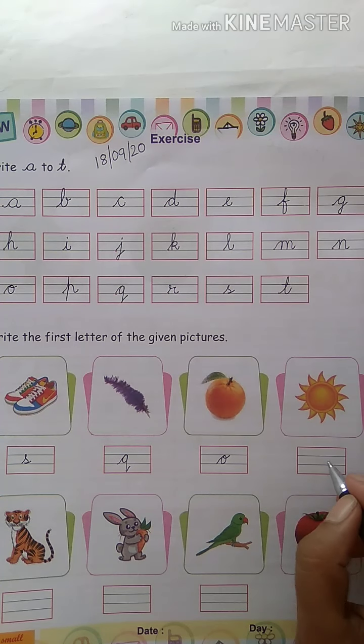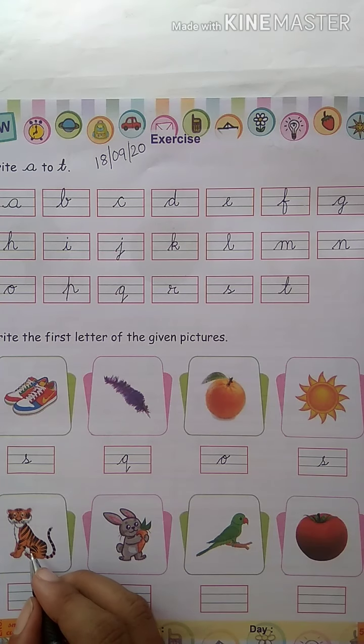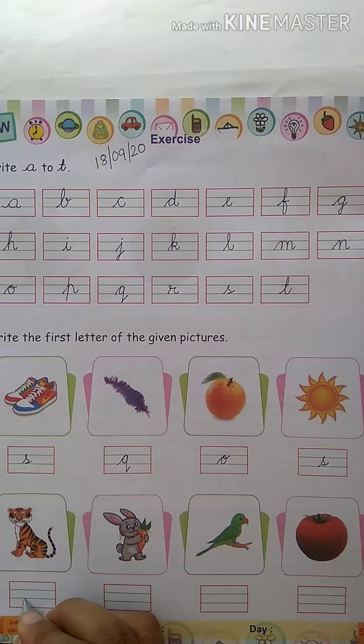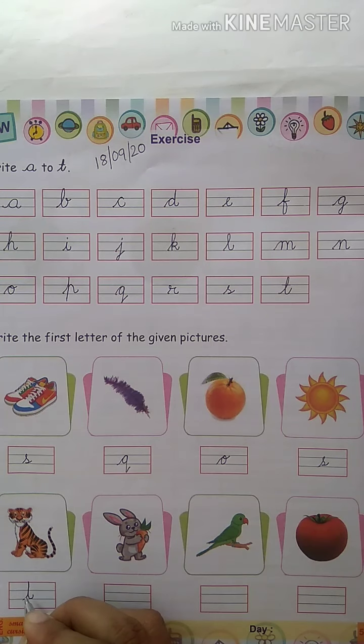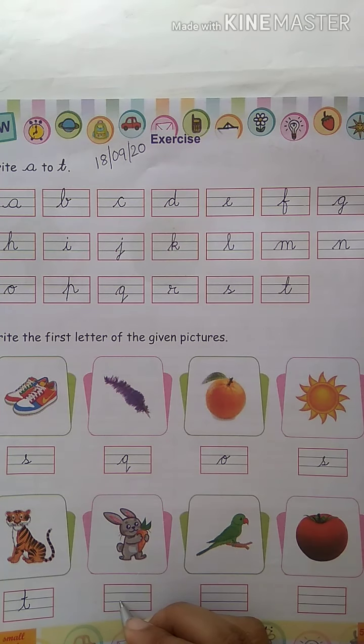Sun. S. S for sun. Tiger. T for tiger. Rabbit. R for rabbit.